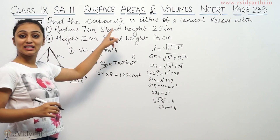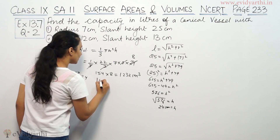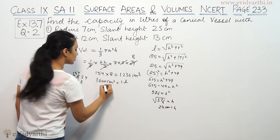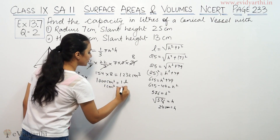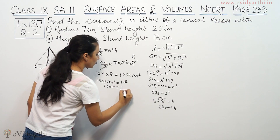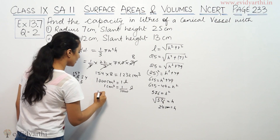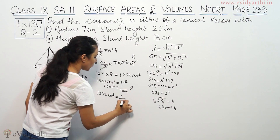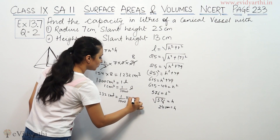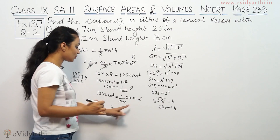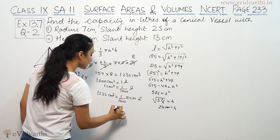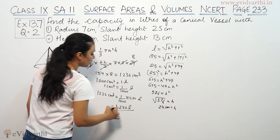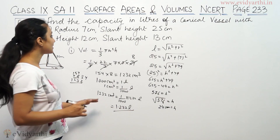Now we need the capacity in liters. We know that 1000 cm³ equals 1 liter. So 1 cm³ equals 1/1000 liters. Therefore 1232 cm³ equals 1232/1000 = 1.232 liters. So this is the answer for the first case.